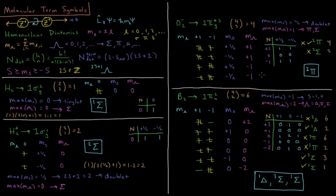So those are the basics of term symbols for homonuclear diatomic molecules. Instead of L we use lambda, the term symbols for S work the same way, multiplicity is the same, but our values of lambda give capital Greek letters instead of capital alphabetic letters. The values of m sub l are plus and minus l instead of going from plus l all the way to minus l.